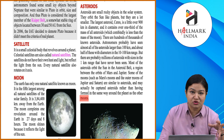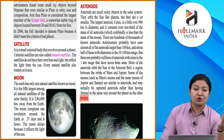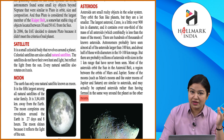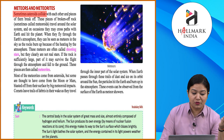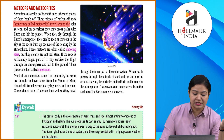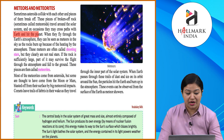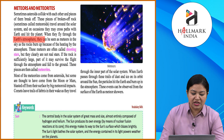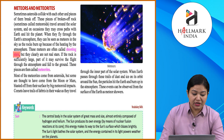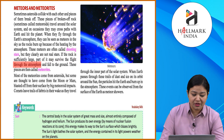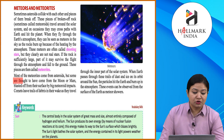Sometimes asteroids collide with each other and pieces break off. These broken pieces, sometimes called meteoroids, travel around the solar system and may cross paths with Earth. When they fly through Earth's atmosphere, they can be seen as meteors — shooting stars — as the rock burns up due to atmospheric heating. If the rock is large enough, part of it may survive and fall to the ground; these pieces are then called meteorites. Most meteorites come from asteroids, but some are thought to have come from the Moon or Mars.